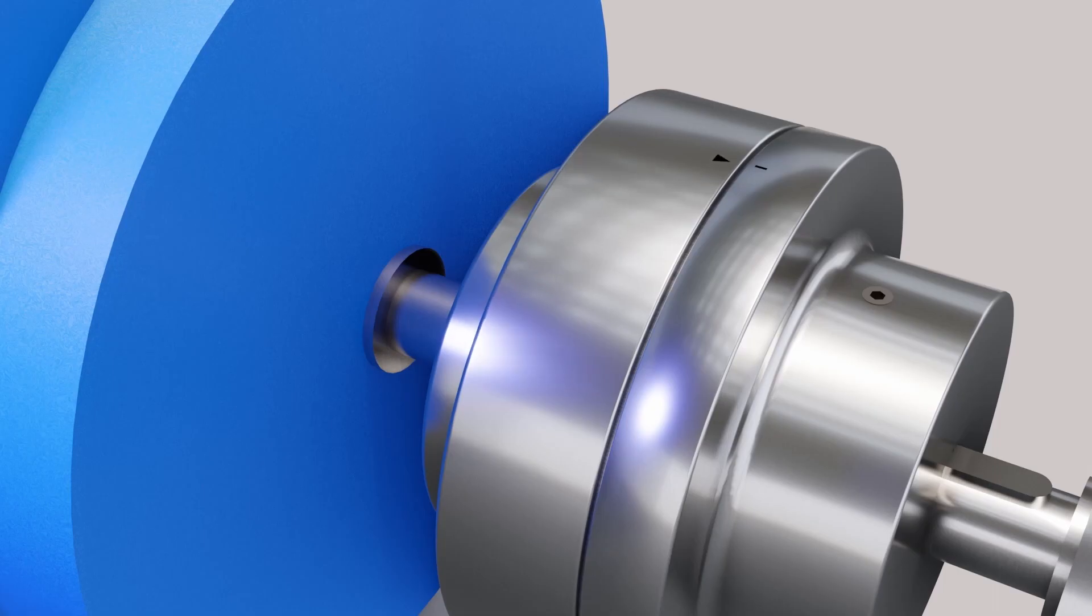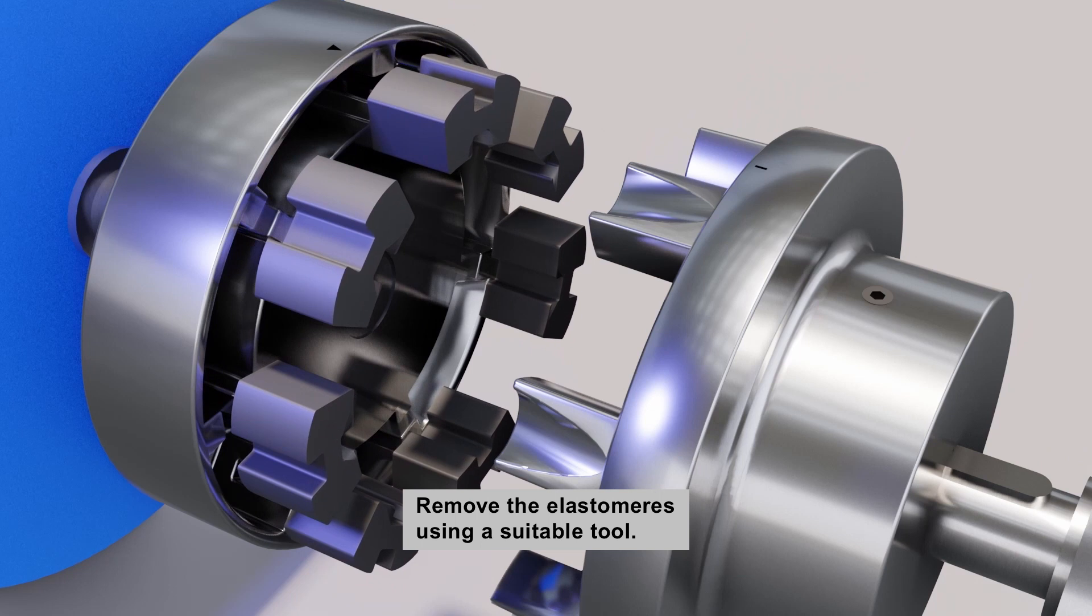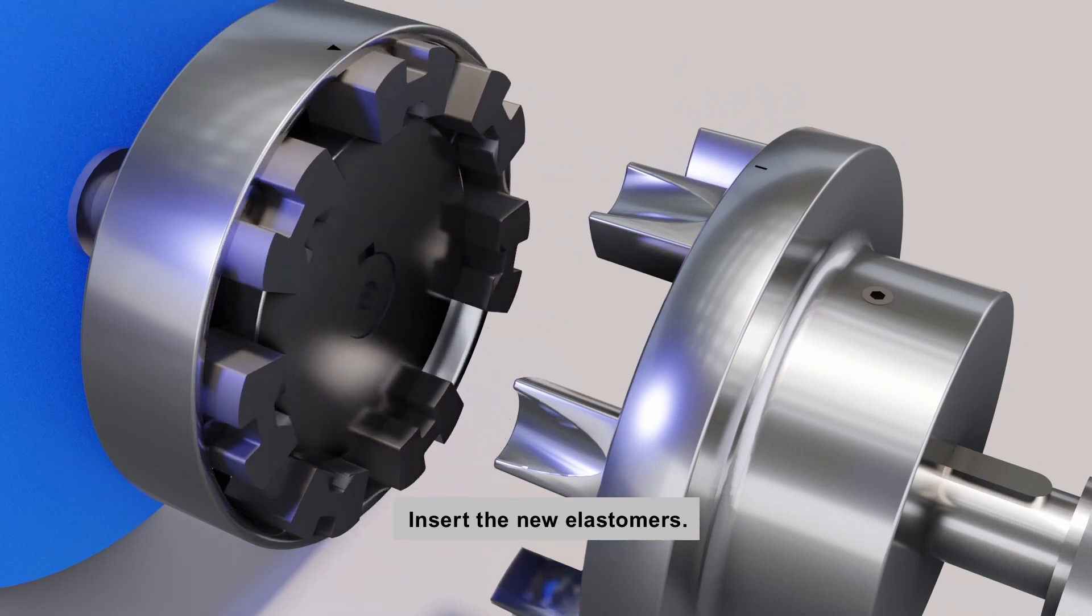To replace the elastomers, disengage the coupled machines. Remove the elastomers using a suitable tool such as a screwdriver, then insert the new elastomers.